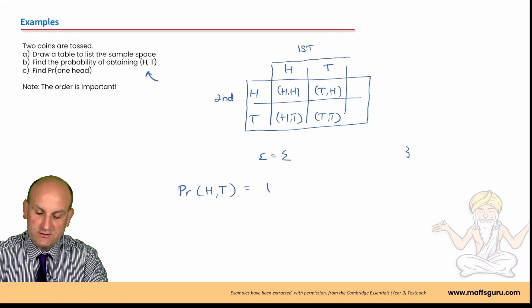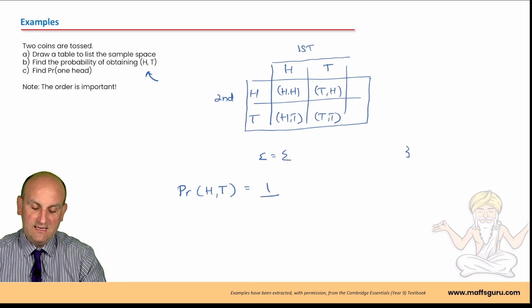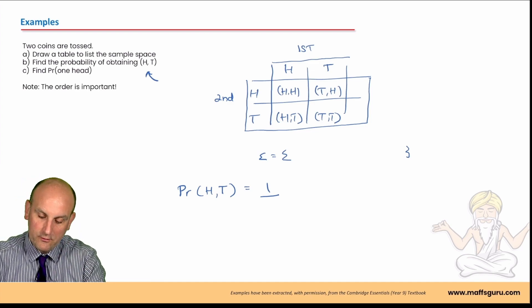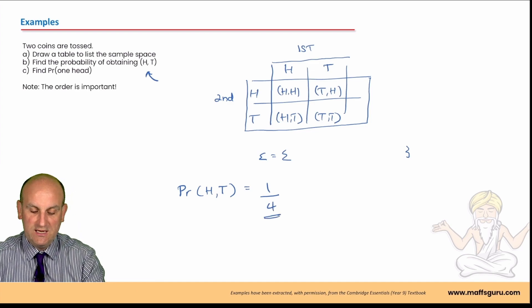It's a probability. So, it's got to be a fraction. So, it's going to be one divided by how many different outcomes were there? Well, looking at that, there's four different outcomes. We're going to be one divided by four. There we go.